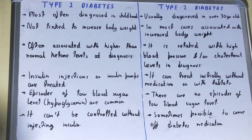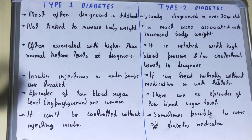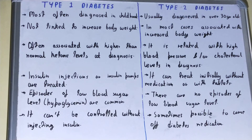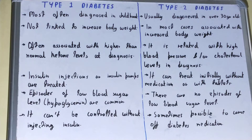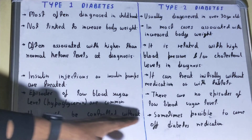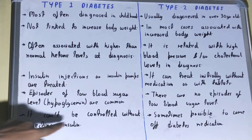Episodes of low blood sugar level are common in Type 1 diabetes. However, in Type 2 diabetes, there are generally no such episodes of low blood sugar levels like those seen in Type 1.